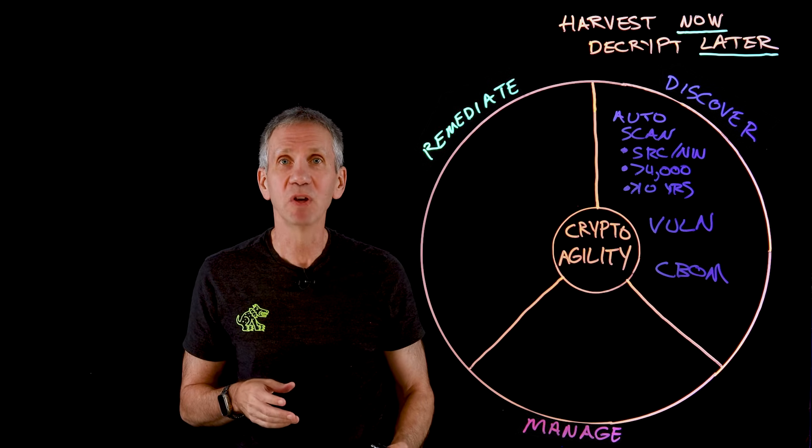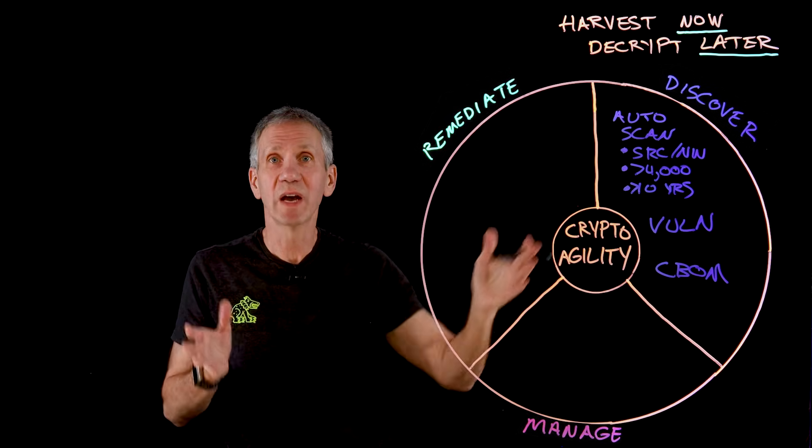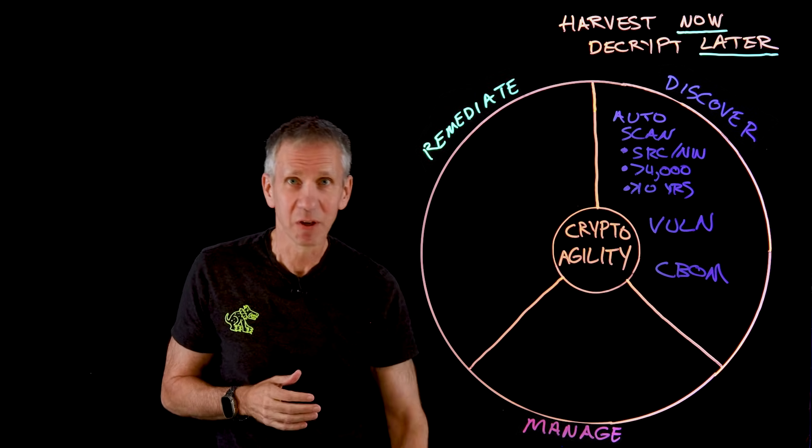And then ultimately the goal is to create this thing, a C-BOM, a cryptographic bill of materials. That's where we're going to have this whole list that we've now discovered. And now with that, we can move into the next step.